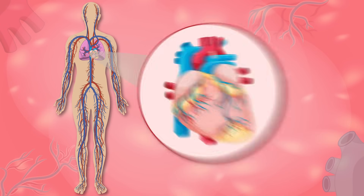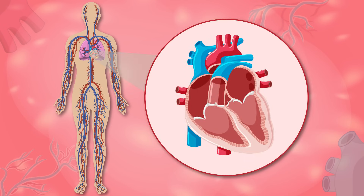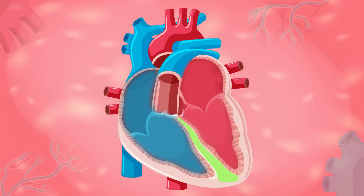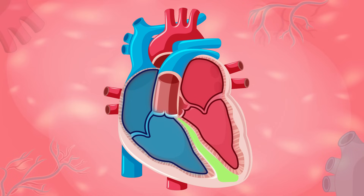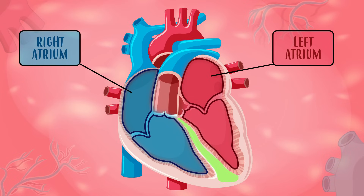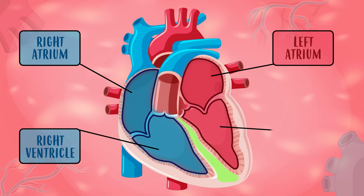The heart is divided into two parts: the right part and the left part, separated by a cellular wall, so they are not connected internally. Each one of these parts has two chambers or cavities. The upper cavities are called right and left atrium, and the lower cavities are called right and left ventricle.